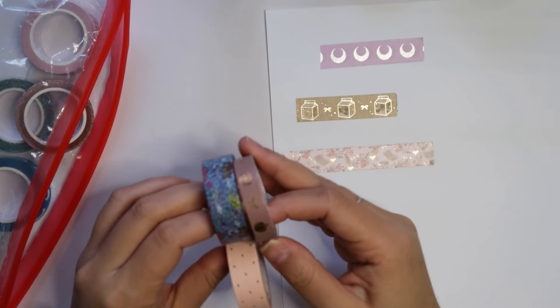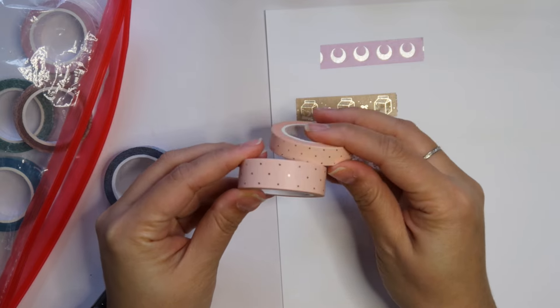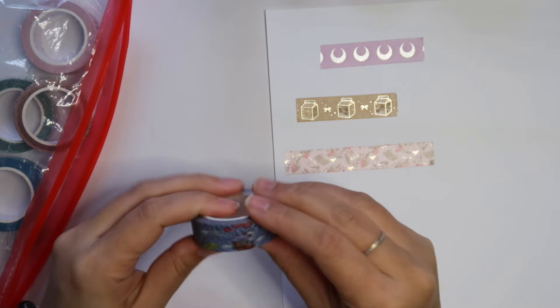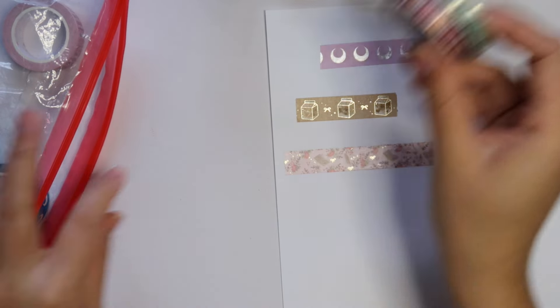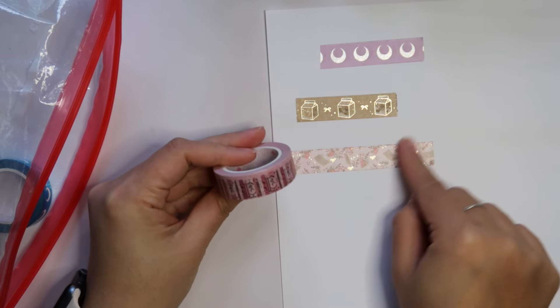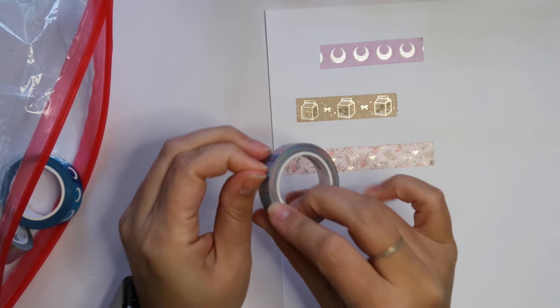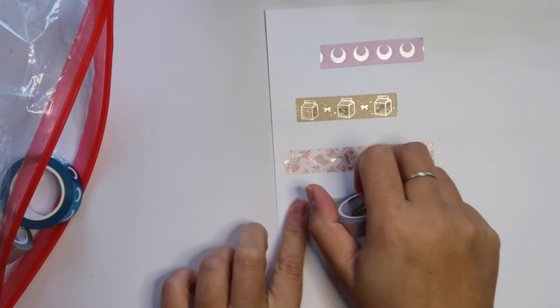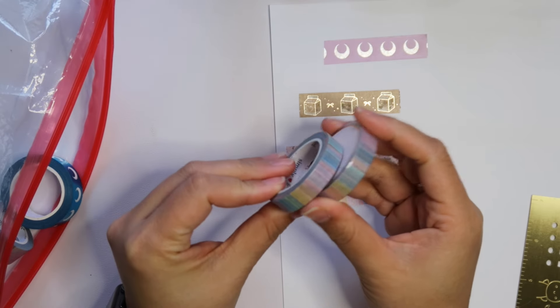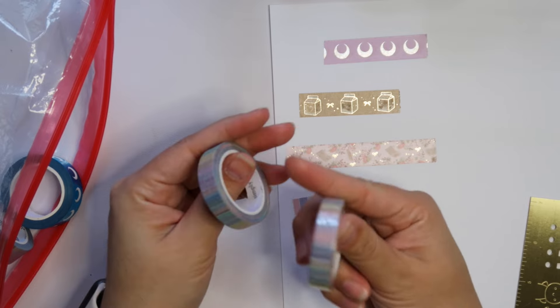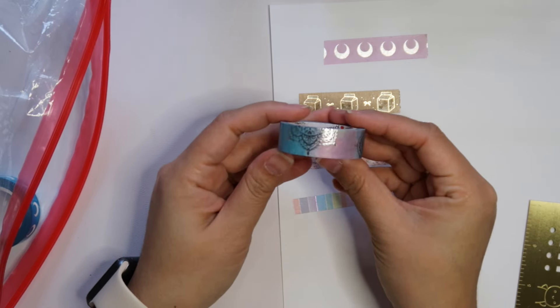This one looks like milk cartons, it's this brown washi tape with milk cartons. Oh the foil is gorgeous, it has a gold foil here. Would I use milk cartons? I don't know, possibly. This is a character washi with a bunch of different characters. I'm probably not going to use that so I will pass that along. Oh my gosh so much to still go through. Love this black and white plaid.